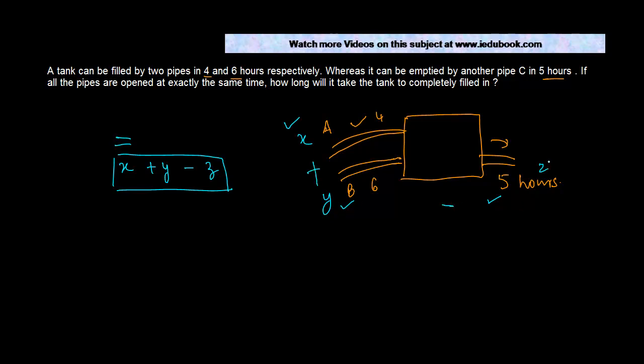So for example, the tank can be filled by pipe A in four hours, B in six hours, and C is basically minus five. How much tank is filled by A in one hour? One fourth of the tank. How much tank does B fill in one hour? Obviously one sixth, because in six hours it can fill it completely. And how much is taken out by C in one hour? One upon five.